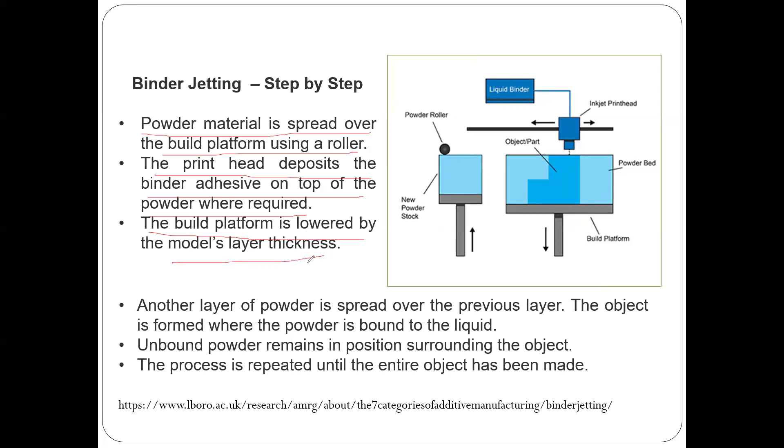The build platform is lowered by the model's layer thickness, and then another layer of powder is spread over the previous layer. The object is formed when the powder is bound to the liquid.